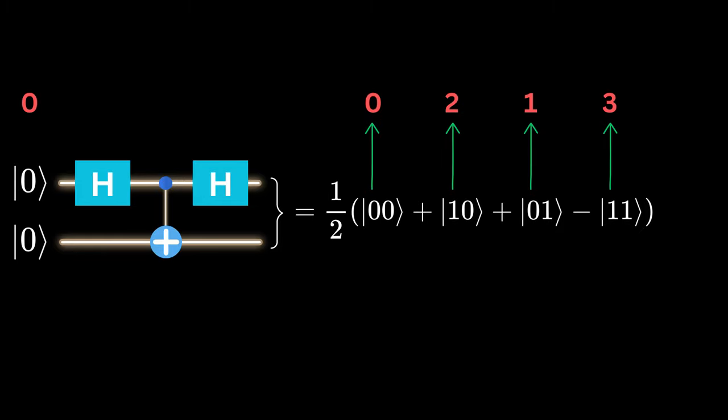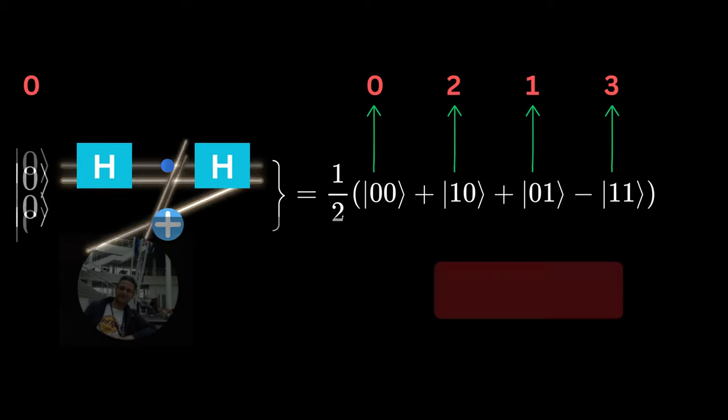If we encode this two decimal representation, then we have a quantum function that maps 0 to the superposition of 0, 1, 2 and 3.